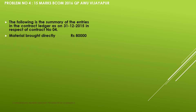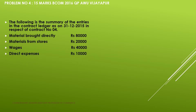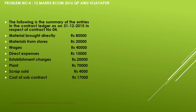Material brought directly Rs. 80,000; materials from stores Rs. 20,000; wages Rs. 40,000; direct expenses Rs. 10,000; establishment charges Rs. 20,000; plant Rs. 70,000; scrap sold Rs. 4,000; cost of subcontract Rs. 17,000.